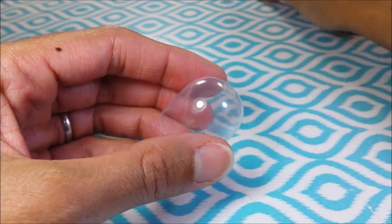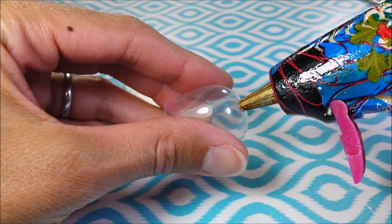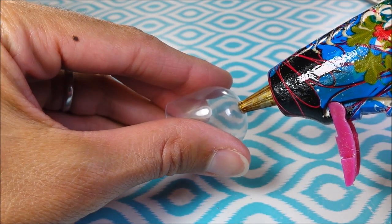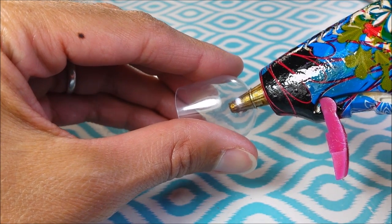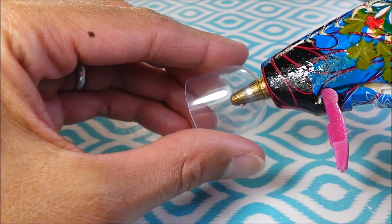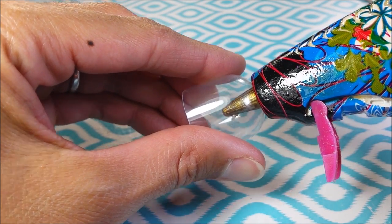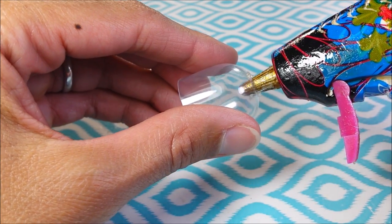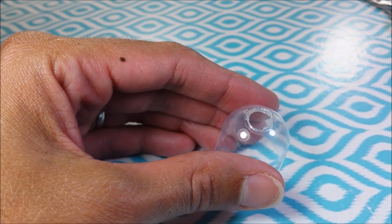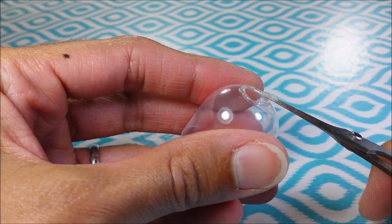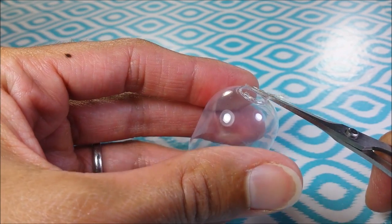And then I'm just creating a hole along my top. If you don't have a high temperature glue gun, you can also just use scissors to poke a hole. Basically you just want your hole to be large enough that you can put water inside of it, and I can just trim off any of this melted plastic.